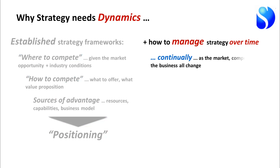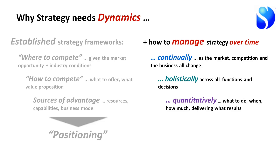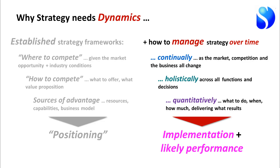We do need more, though, because what we then have to do is understand how to manage strategy over time. Having chosen that position, you have continually to make choices as the market, competition, and business itself actually change all the time. And you've got to do it across all functions and decisions, holistically across the business — and quantitatively as well. When you make decisions and choose actions, you're choosing what to do, when, how much. And you also want to know what results are going to come out of that. So the extra thing we need is to understand about implementation: what am I going to do to deliver this strategy and what likely performance am I going to get out of that?